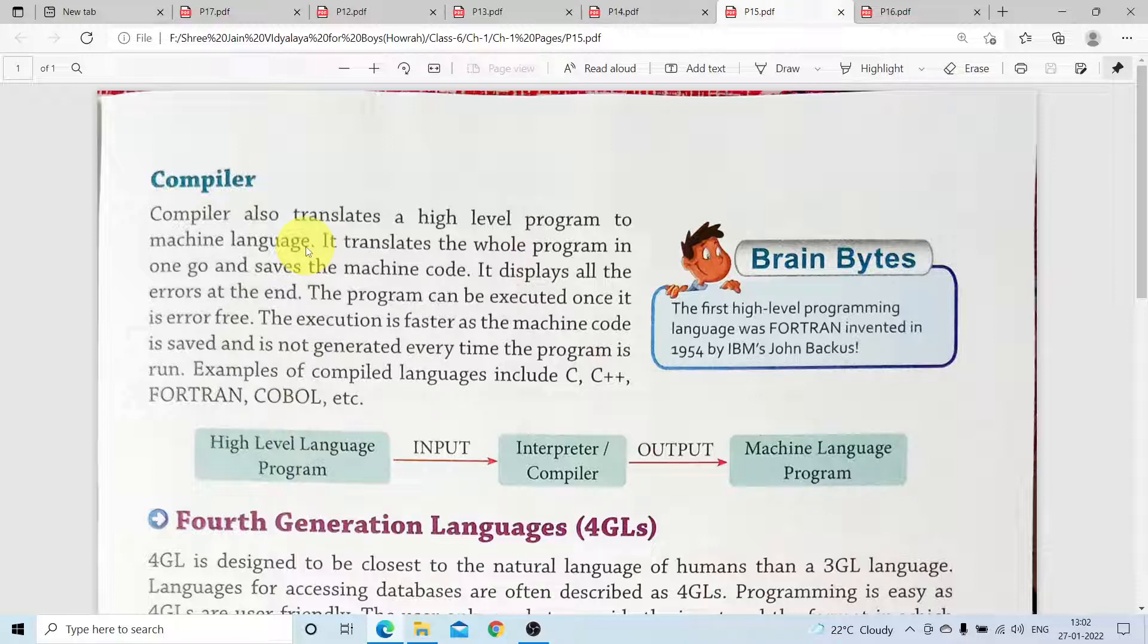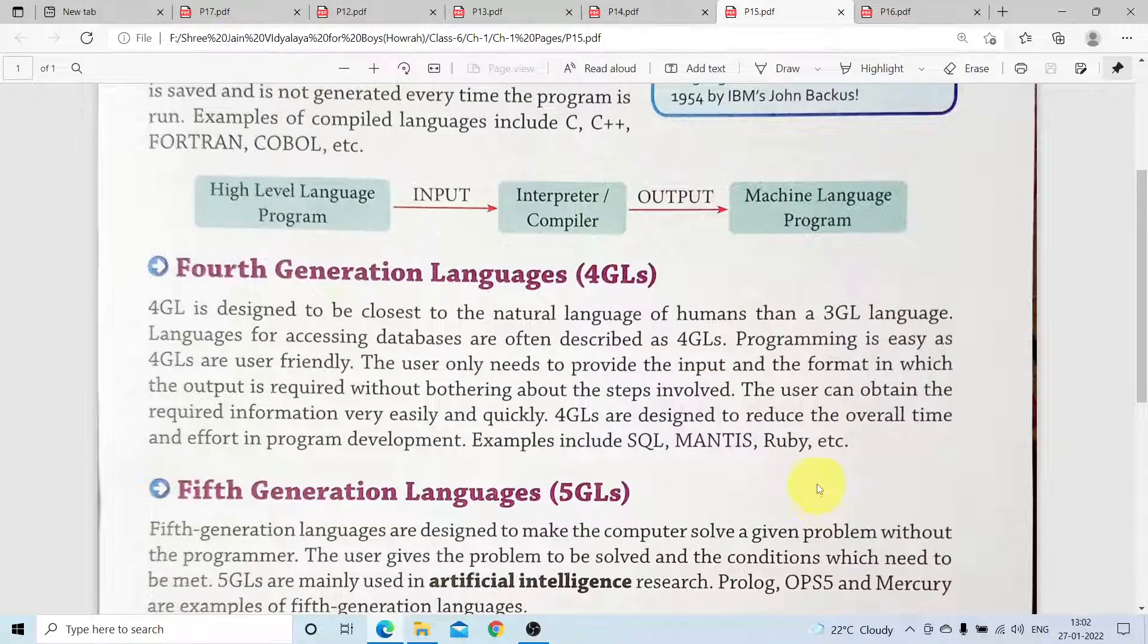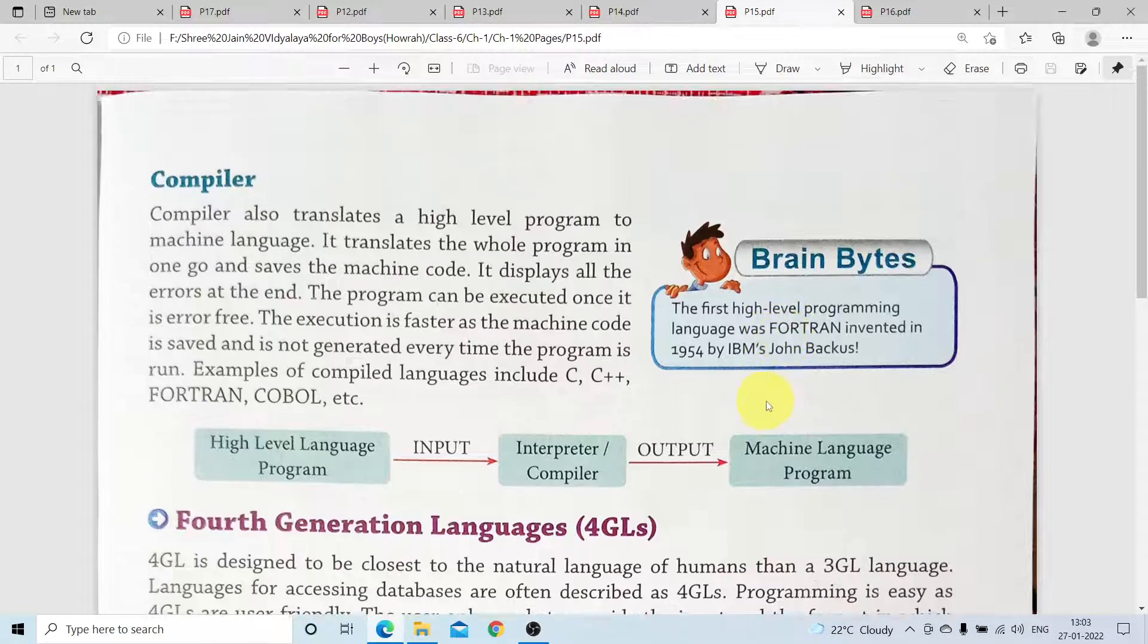Compiler uses languages like C, C++. High level language input goes through interpreter or compiler to produce machine level language program as output. This concludes the discussion on 4th and 5th generation languages. Thank you.